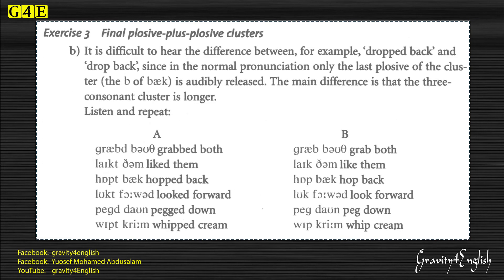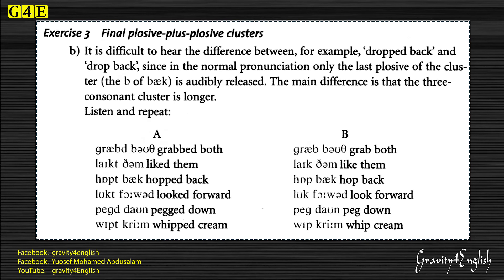3B: It is difficult to hear the difference between, for example, 'dropped back' and 'drop back', since in normal pronunciation only the last plosive of the cluster — the B of 'back' — is audibly released. The main difference is that the three-consonant cluster is longer.